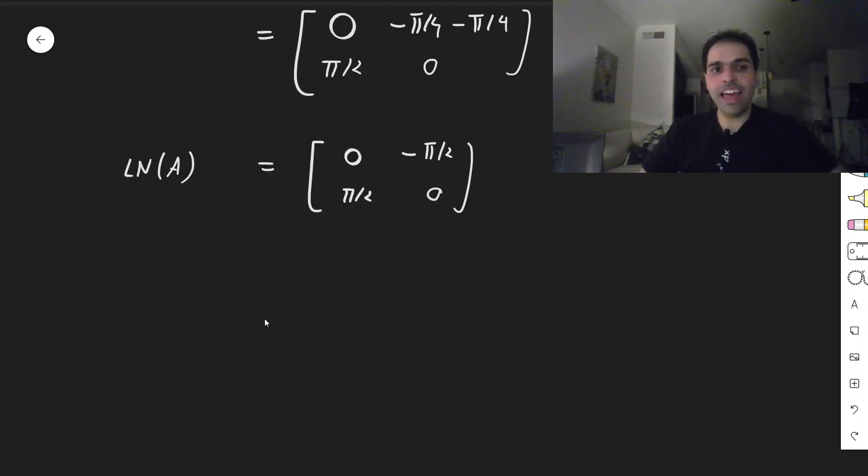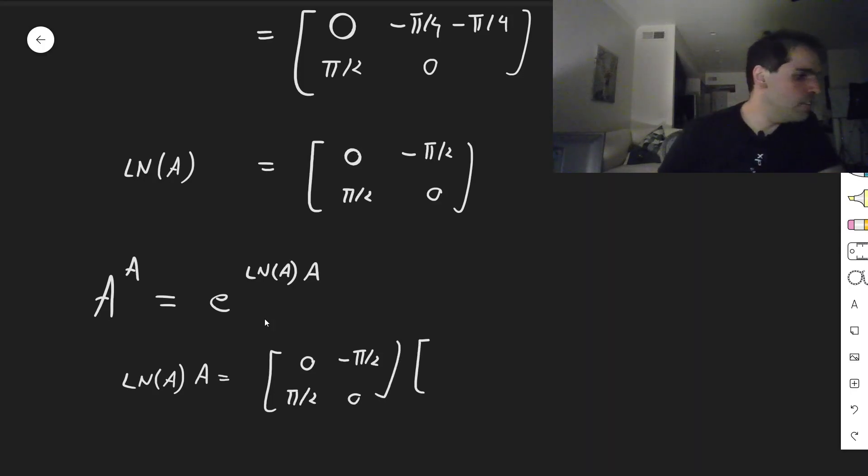All right, so we calculate the ln of A, and now to calculate A to the A, which we wanted. Remember, it's E of ln of A times A. And then ln of A times A, what this becomes, 0 minus pi over 2, pi over 2, 0. And our original matrix, which I believe was 0 minus 1, if I'm not mistaken, it's 0 minus 1, 1, 0. And let's calculate that, so 0 minus pi over 2, and then 0, I guess, and then 0, and then minus pi over 2.